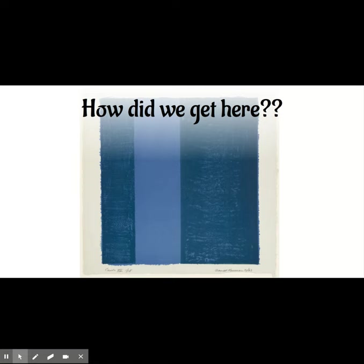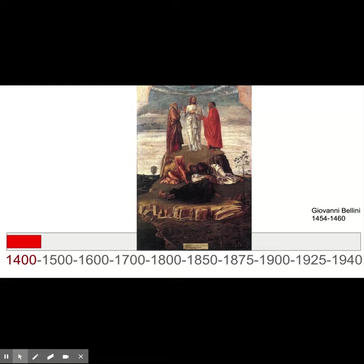For nearly five centuries prior, artwork is representational. Artwork likes to present things that we understand — people, scenes, landscapes, buildings — so that when the viewer looks at it, we understand what the artist was trying to tell us.